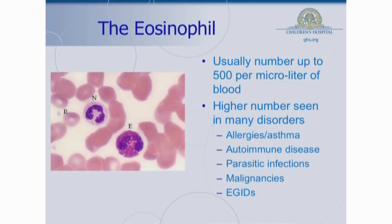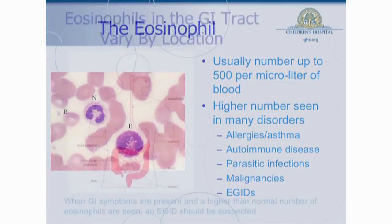It could be allergies or asthma, it could be some sort of autoimmune disease, it could be a parasite, certain types of malignancies can lead to increased numbers of eosinophils, and then of course the EGIDs, which is what we're here to talk about today.